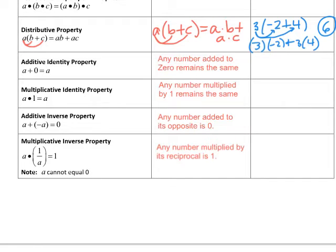The additive identity property is where we add the number zero to any number, and the number remains the same. Adding zero to a number does not change the number. So for instance, negative 12 plus zero is still going to be negative 12.